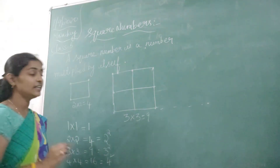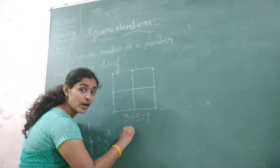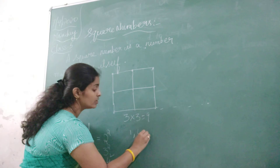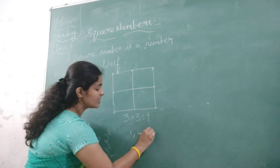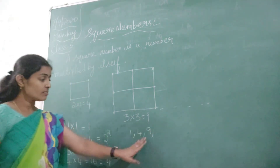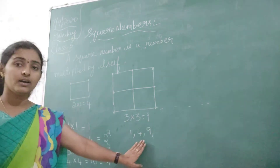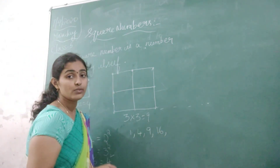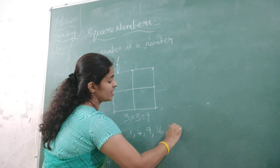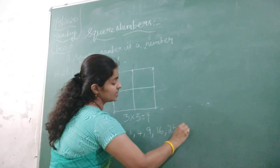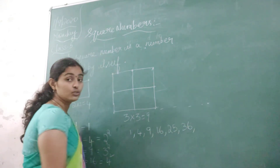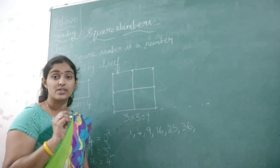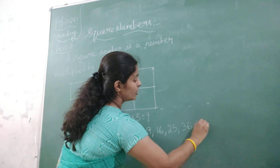So how the pattern will be? 1 squared is 1. Next, 2 squared is 4. 3 squared is 9. Then next, 4 squared is 16. 5 squared is 25. 6 squared is 36. 7 squared — that is 7 into 7 — 7 sevens are 49.